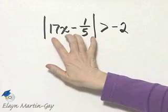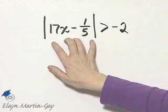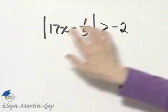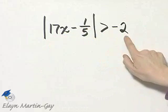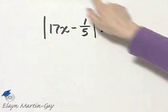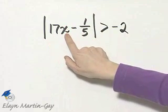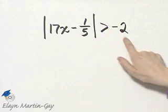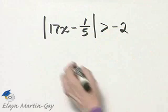The answer to the left side is always a non-negative number, and a non-negative number is always greater than negative 2. So no matter what the value of x is, the absolute value is always non-negative, always greater than negative 2. The answer here, then,